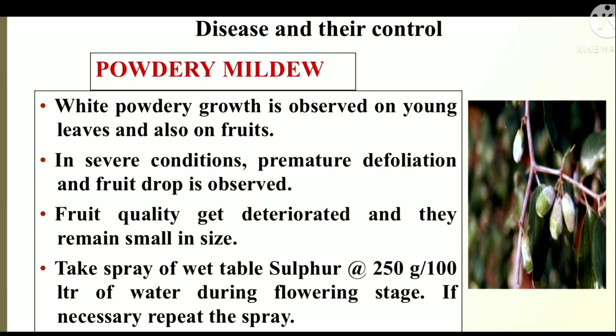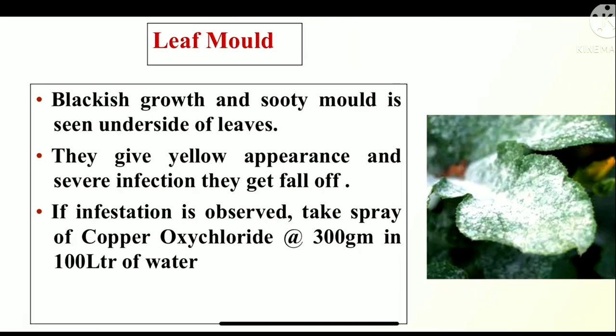Disease and their control. Powdery mildew: white powdery growth is observed on young leaves and also on fruits. In severe conditions, premature defoliation and fruit drop is observed. Fruit quality gets deteriorated and they remain small in size. Take spray of wettable sulfur 250 g per 100 liters of water during flowering stage; if necessary, repeat the spray. Leaf mold: blackish growth and sooty mold is seen on the underside of leaves. They give yellow appearance and in severe infection leaves fall off. If infection is observed, take spray of copper oxychloride 300 g in 100 liters of water.